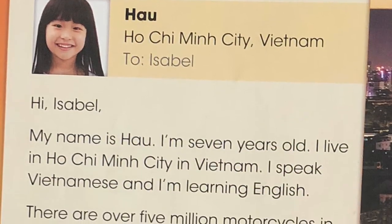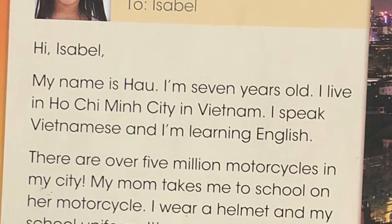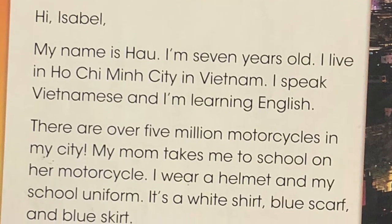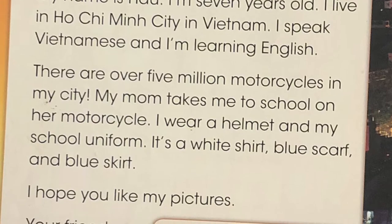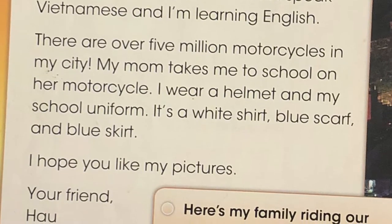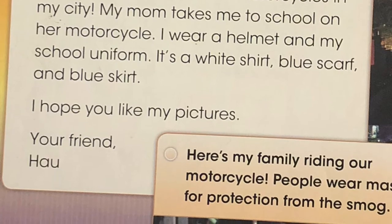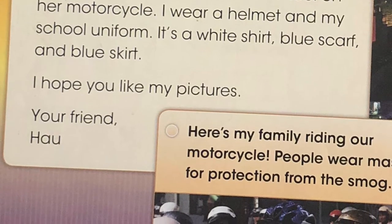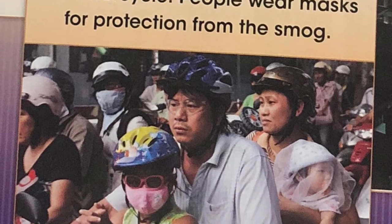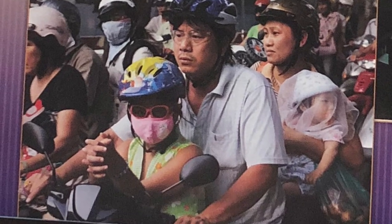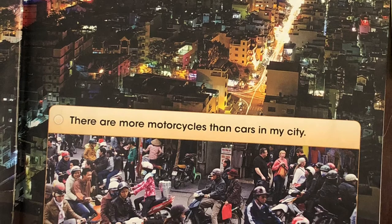Hao, Ho Chi Minh City, Vietnam. To Isabel. Hi, Isabel. My name is Hao. I'm 7 years old. I live in Ho Chi Minh City in Vietnam. I speak Vietnamese and I'm learning English. There are over 5 million motorcycles in my city. My mom takes me to school on her motorcycle. I wear a helmet and my school uniform — it's a white shirt, blue scarf, and blue skirt. I hope you like my pictures. Your friend, Hao. Here's my family riding our motorcycle. People wear masks for protection from the smog. Ho Chi Minh City is the largest city in Vietnam. There are more motorcycles than cars in my city.